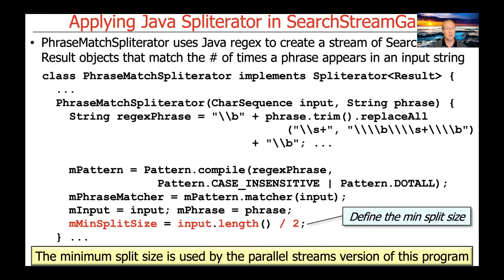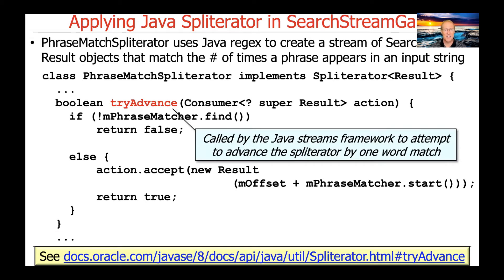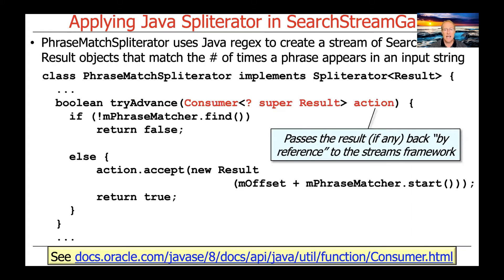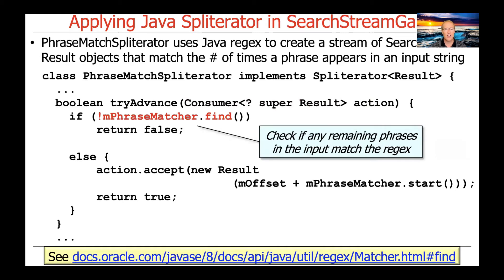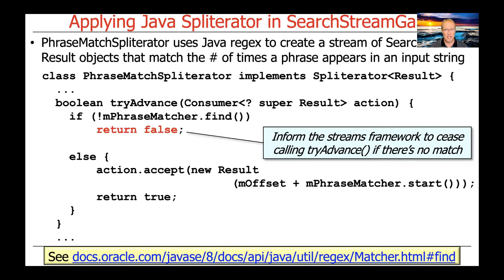Here's the tryAdvance method — this is the one that really does the heavy lifting. It's called by the Java streams framework to attempt to advance the Spliterator by one phrase match. It's passed an action which is a consumer, and this consumer is used to give information back to the streams framework if there is a match — it tells it where the match occurred. Here's the find method defined on phraseMatcher, which is the regular expression matcher. It checks if it can find that phrase in the input string up to that point. If it cannot find it, it returns false — negating that indicates no match was found, meaning we've either found all matches or there are none, so we bail out by returning false, telling the streams framework to stop calling tryAdvance.